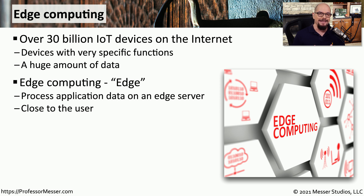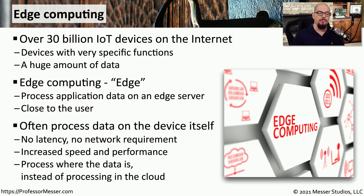A lot of the technology and the data for these devices are occurring on the devices themselves. We call this edge computing, or sometimes just abbreviated as edge. This means that the applications that are running and the decisions being made from the data created by these applications are all occurring on the local system and don't have to go out to the internet. Since there would be no requirement to communicate this data out to the internet, we don't have to worry about latency or any type of wide area network or internet connectivity. That also means that the speed and performance of this device should be at the local speed of our network.